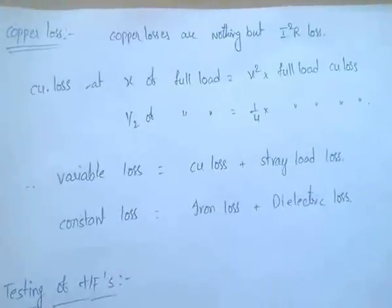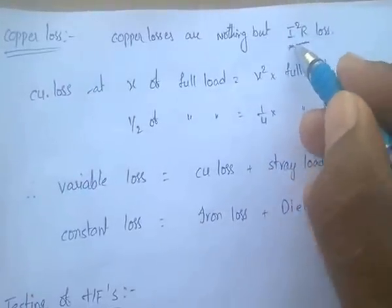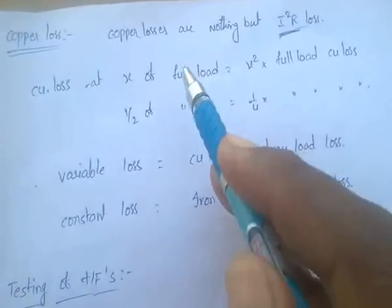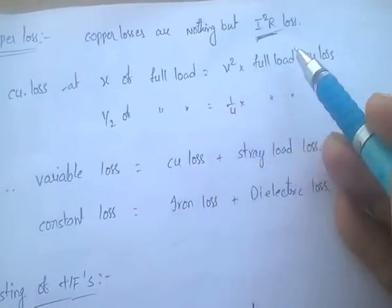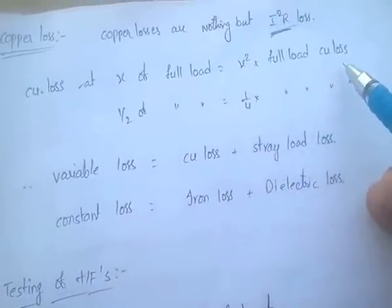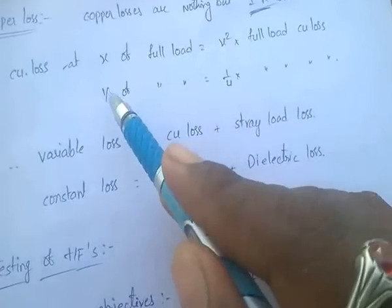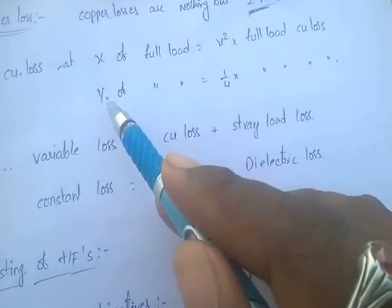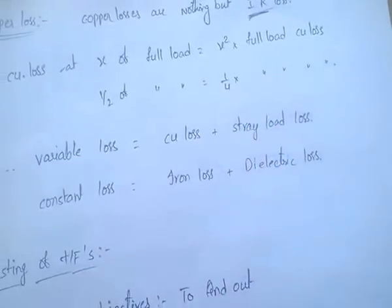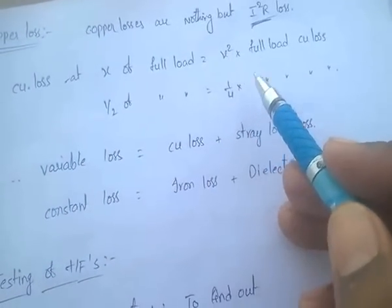Copper losses are nothing but I²R losses. Copper losses at x of full load equal to x² into full load copper losses. At half full load, x equals 1/2, so copper loss equals (1/2)² = 1/4 of the full load copper losses.